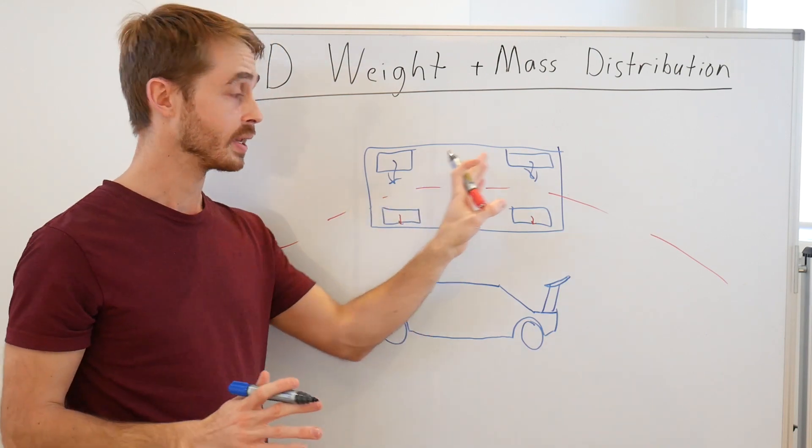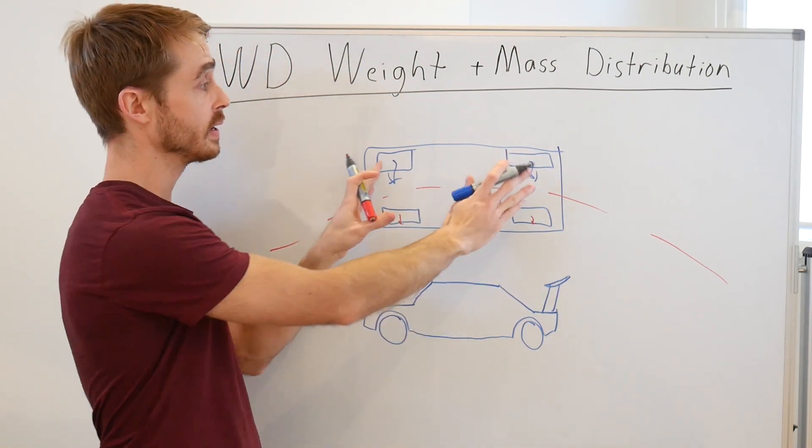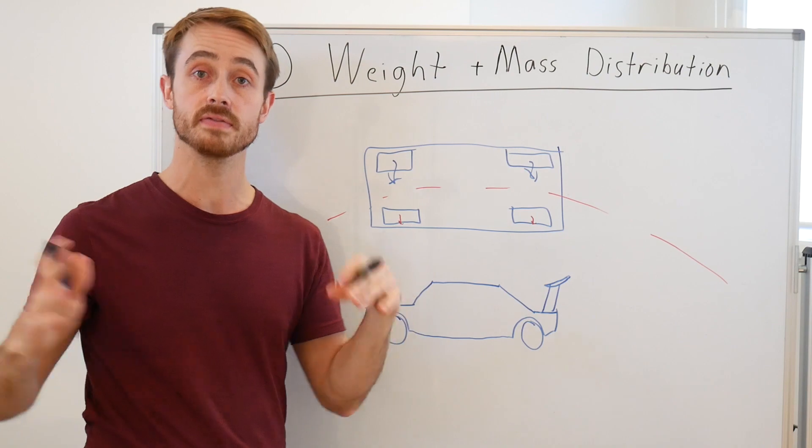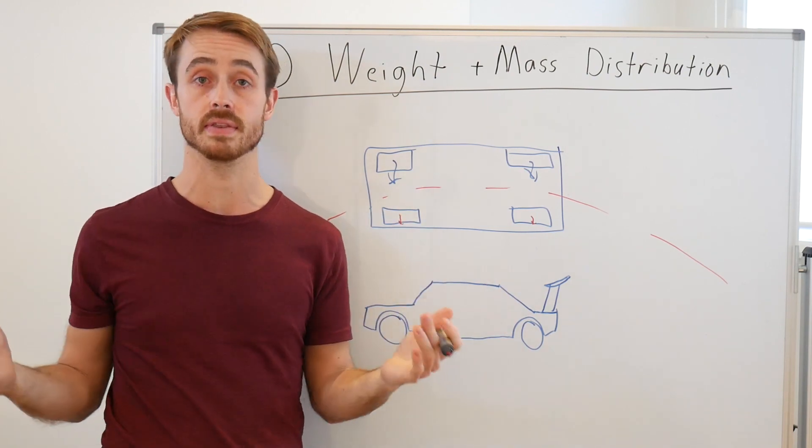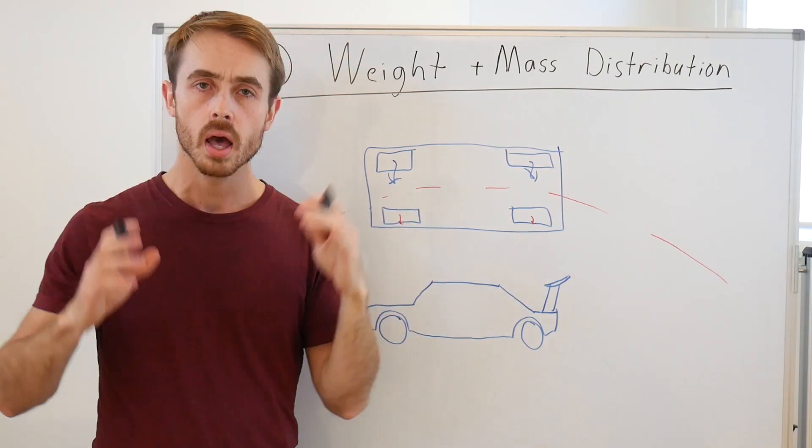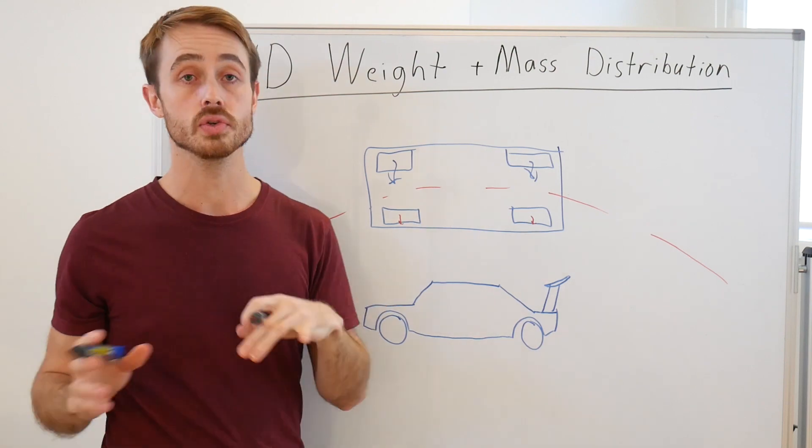Assuming we have a 50-50 weight distribution, that means that's all fine and dandy. We end up with our mass balance 50-50, we can size our tires 50-50 because everything's even and that's all great.